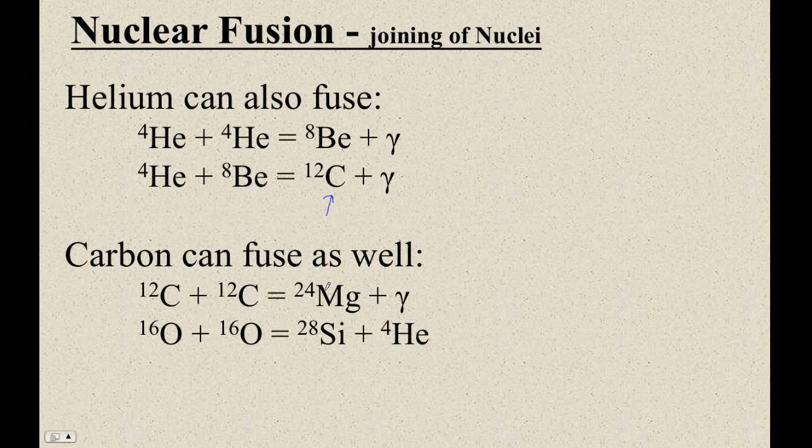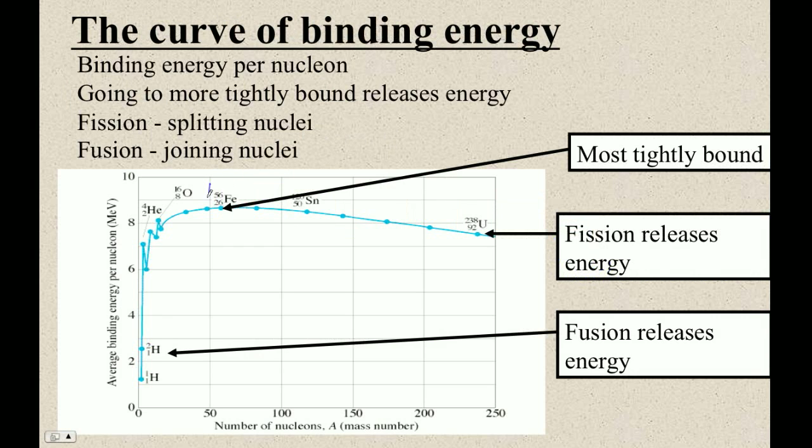And then carbon can fuse and make things, and it just keeps going. Remember, it's going to go until you get to iron, iron or nickel. These guys are the slag heap. These are the most tightly bound things, and so you can't get any more energy out of them. If you try to go higher, you've got to actually put energy in to make things heavier. And if you try to crack them apart, you have to put energy in. So it looks like it's the highest energy, but it's actually the lowest energy. Anyway, that's fission and fusion.